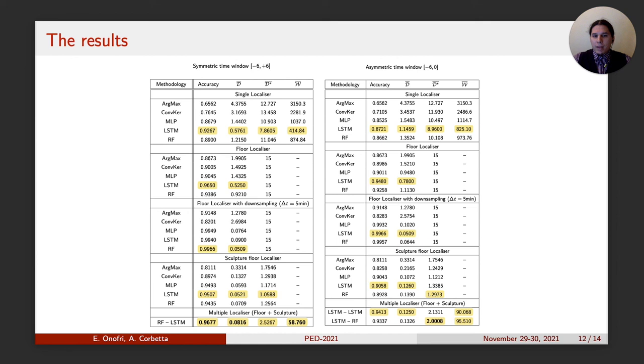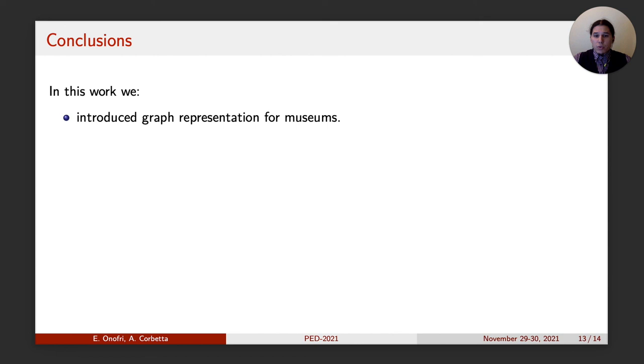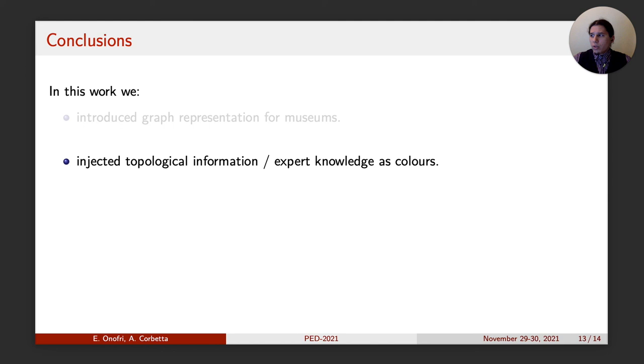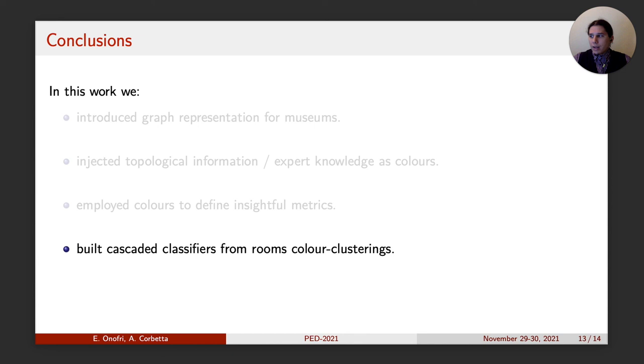On the contrary, applying a couple of cascaded classifiers greatly improves the performances, enhancing the global accuracy to nearly 97%, while keeping the average error lower than 3, meaning an effective displacement of 1 to 2 rooms. To resume the contributes introduced in this work, we present a graph representation of the museum, and we provide a framework to inject expert knowledge in it by means of colors, both on the edge, as architectural constraint, and on the nodes, as conceptual features. We used this topological information to infer insightful metrics, and to build classifiers made of cascaded localizers. All of this allowed us to greatly increase our performances on room-level trajectory construction.